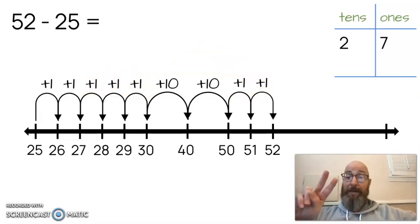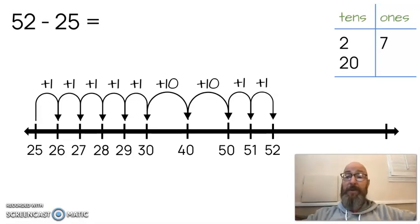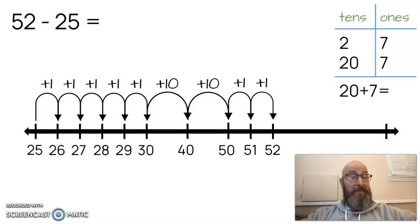2 tens is worth how much? 10, 20. So I'm going to put a 20 there. 7 ones is, of course, worth 7. I'm going to add those two numbers together. 20 plus 7. Do you know the answer? 27. That's right. So the answer to our question, 52 minus 25, is 27.